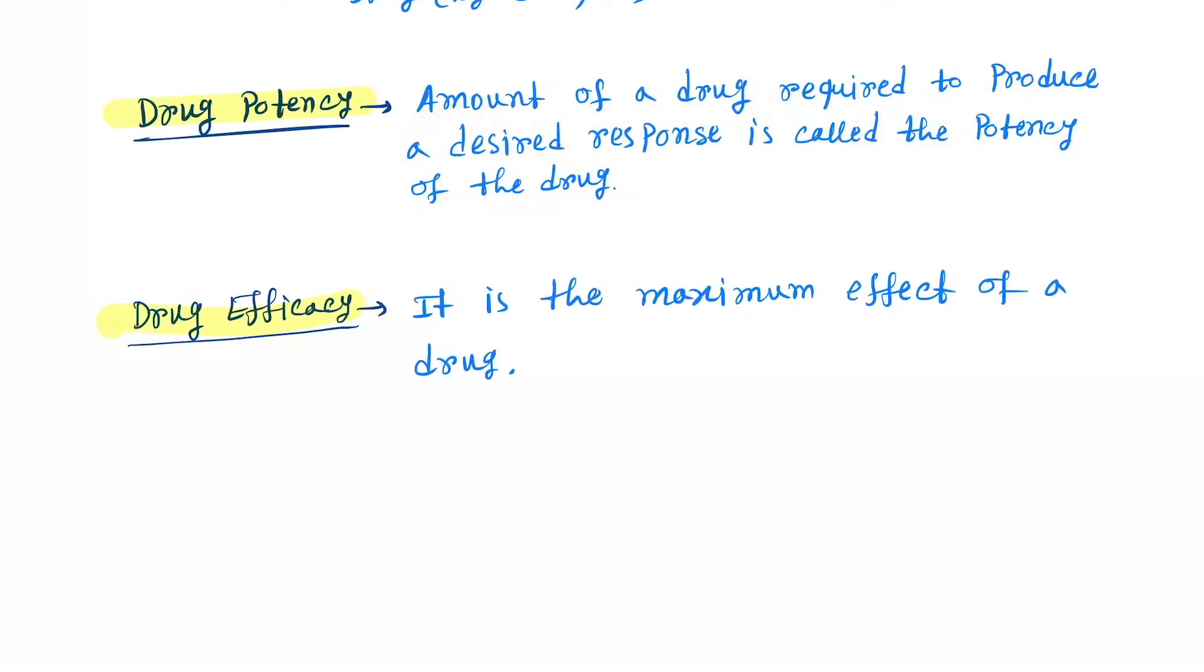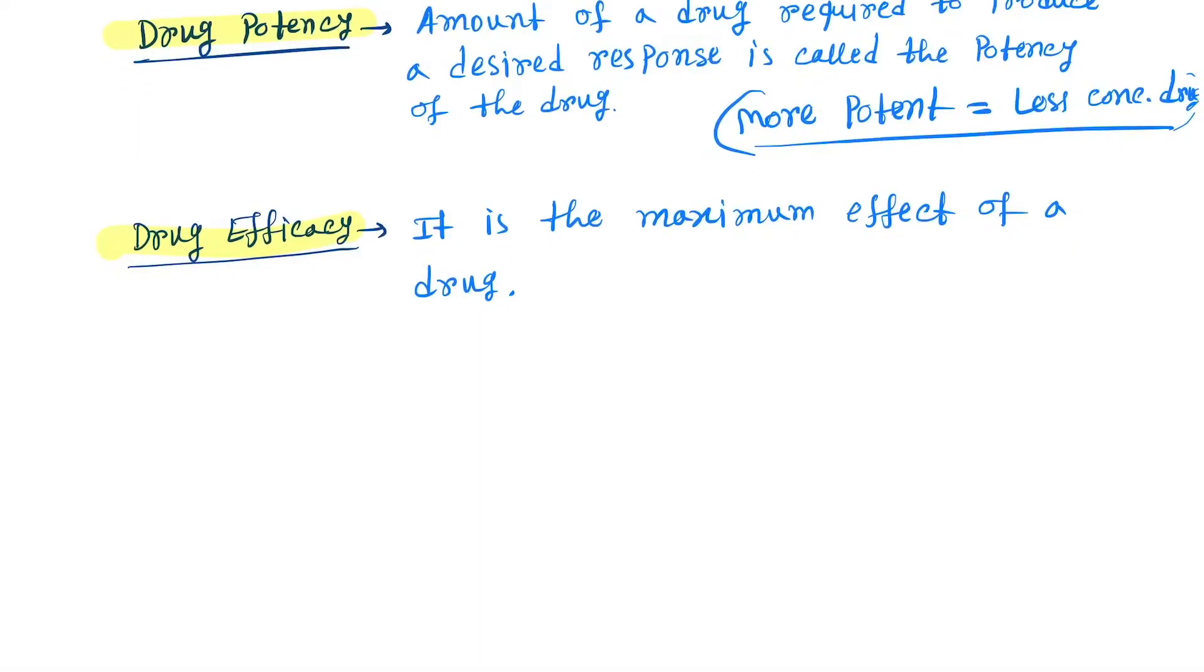Less concentration means more potency. A more potent drug requires less concentration of the drug. Drug efficacy is the maximum effect of a drug. Now let's understand this in a graph.